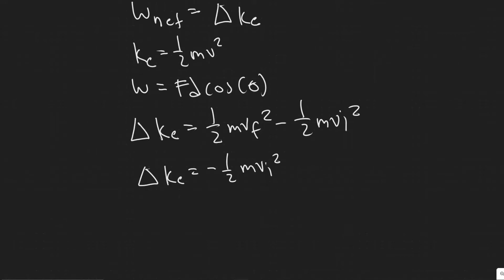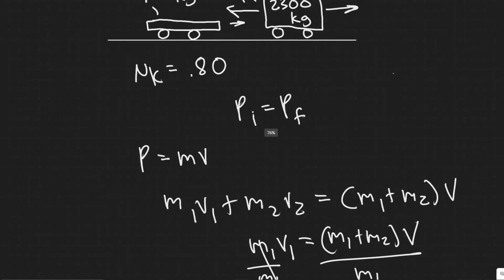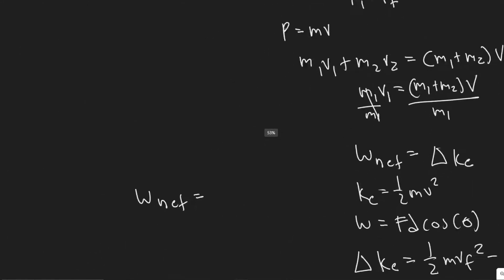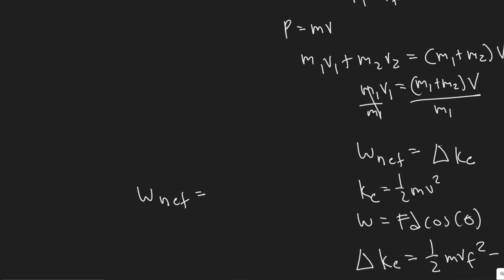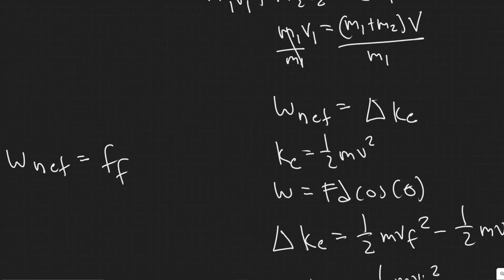Next, we look at the net work. We found the change in kinetic energy, but we need the net work done. The only force acting on the cars in this direction is the force of friction. So the net work is really just the work due to the force of friction: friction force times distance times cosine of theta.